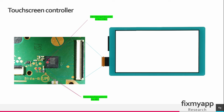This touchscreen controller is responsible for processing the touch inputs and translating them into actions or commands that the console can understand. When you touch the screen, your fingers disrupt the screen's electrostatic field, so the controller determines the precise location of the touch on the screen. This is done by analyzing the signals received from the touch points and using an algorithm to calculate the exact coordinates of the touch.